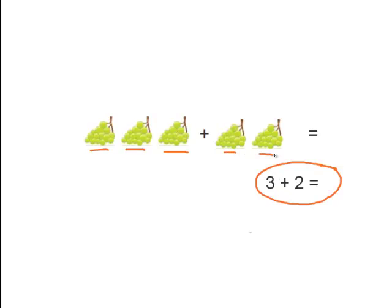Plus, 1, 2. So, you get 3 plus 2 equals 5. 5 bunches of grapes.